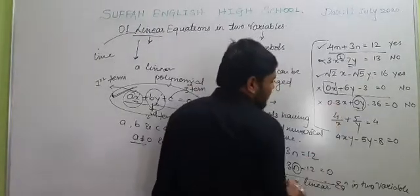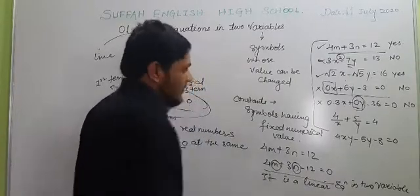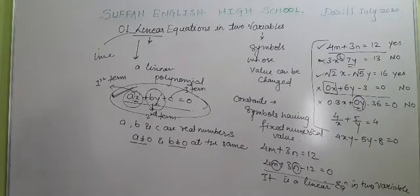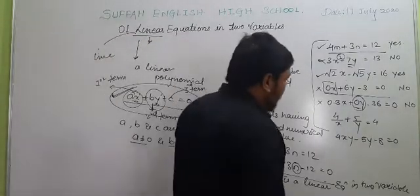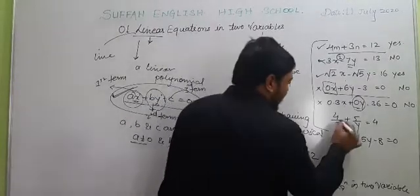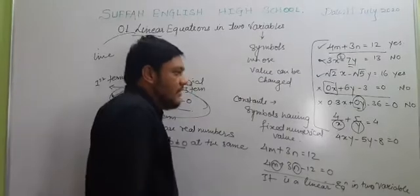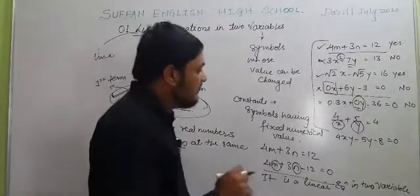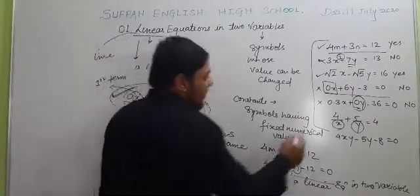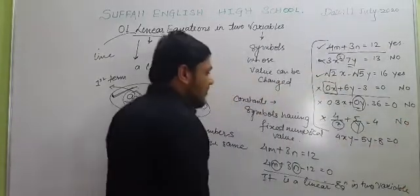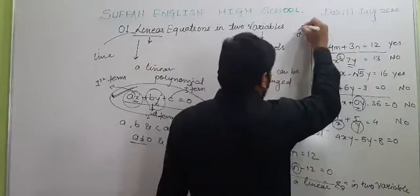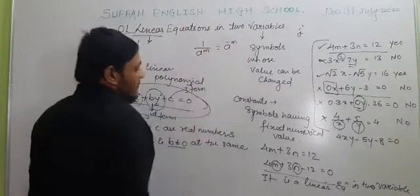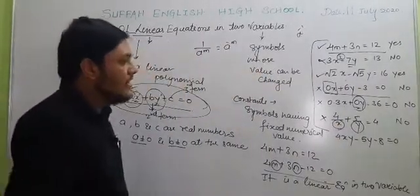The next equation is 4/X + 5/Y = 4. Here, X and Y are in the denominator. Using the rule 1/A^m = A^(−m), the index of X becomes −1. We do not want a negative index for a linear equation, so this is not a linear equation.